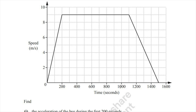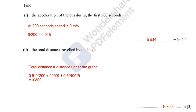So the total distance equals the area under the graph: 0.5 times 9 times 200 for the first triangle, plus 900 times 9 for the rectangle, plus 0.5 times 400 times 9 for the second triangle, which sums to 10,800 metres. The final answer is 10,800 metres.